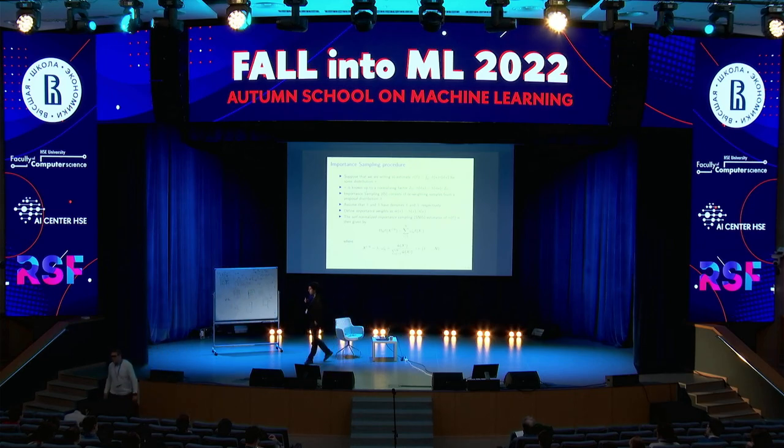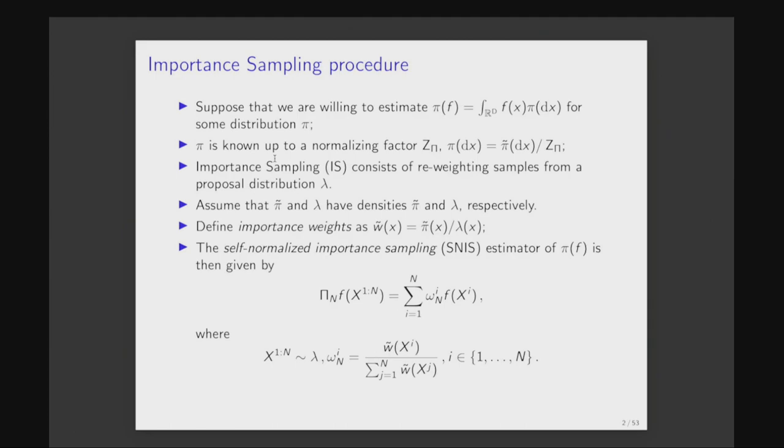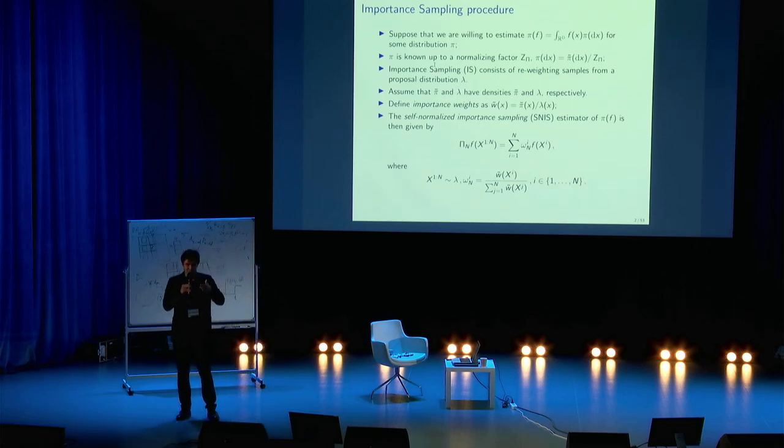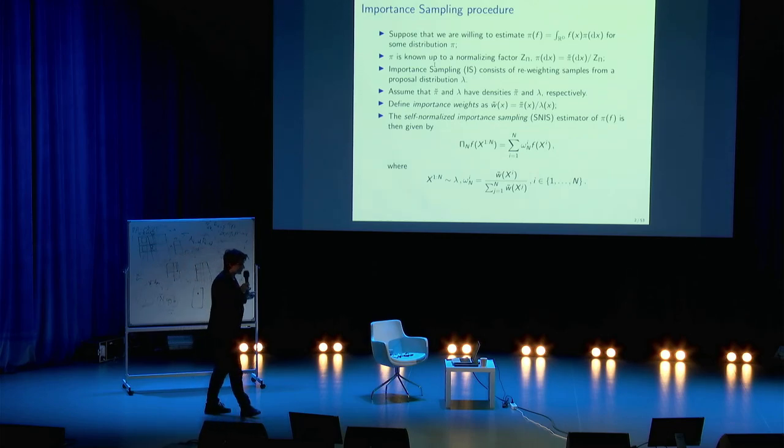We aim to solve the sampling problem. We have some distribution pi in R^D, and we are willing either to compute an integral of some function f with respect to distribution pi, or we want to sample from distribution pi directly, for example, to use later these samples in Bayesian inference or other applications. It's a very classical problem. It's not always the case that you can generate independent, identically distributed random variables from pi. For example, this problem can be explicitly solved only for one-dimensional distributions when you can use inverse cumulative distribution function tricks and other stuff.